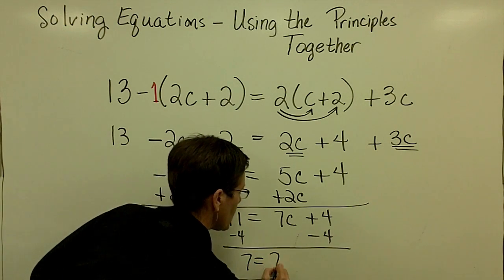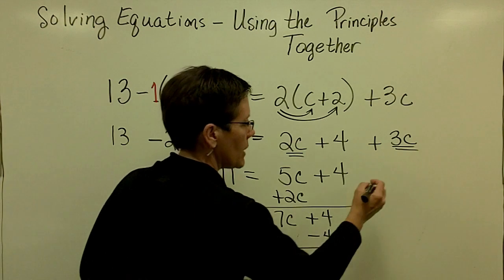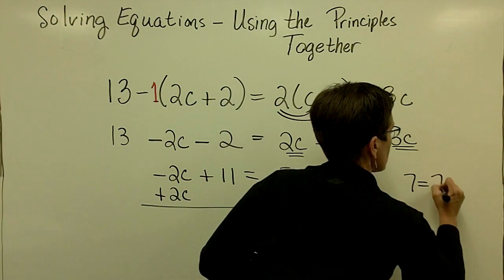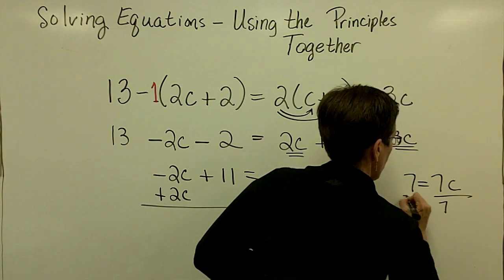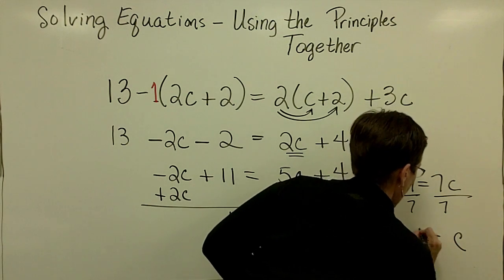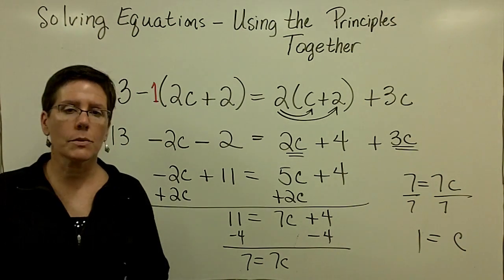And I have 7 equals 7c. I'm going to bring that over here. 7 equals 7c. And I'll divide both sides by 7 and find out that c is equal to the number 1.